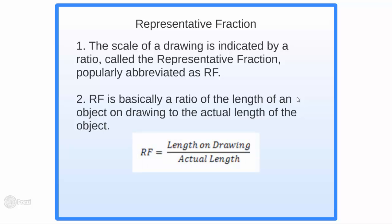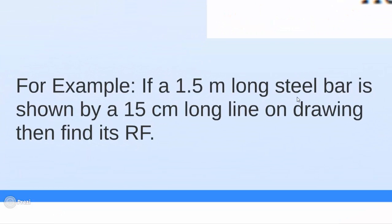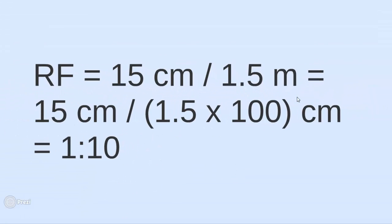Let's understand RF in detail with an example. A 1.5 meter long steel bar is shown by a 15 centimeter long line on drawing. Find its RF. It's very clear in the problem description that the actual length of the steel bar is 1.5 meters. Whereas the length of the steel bar shown on drawing is 15 centimeters. So this is going to be your length on your drawing sheet and this is going to be the actual length.